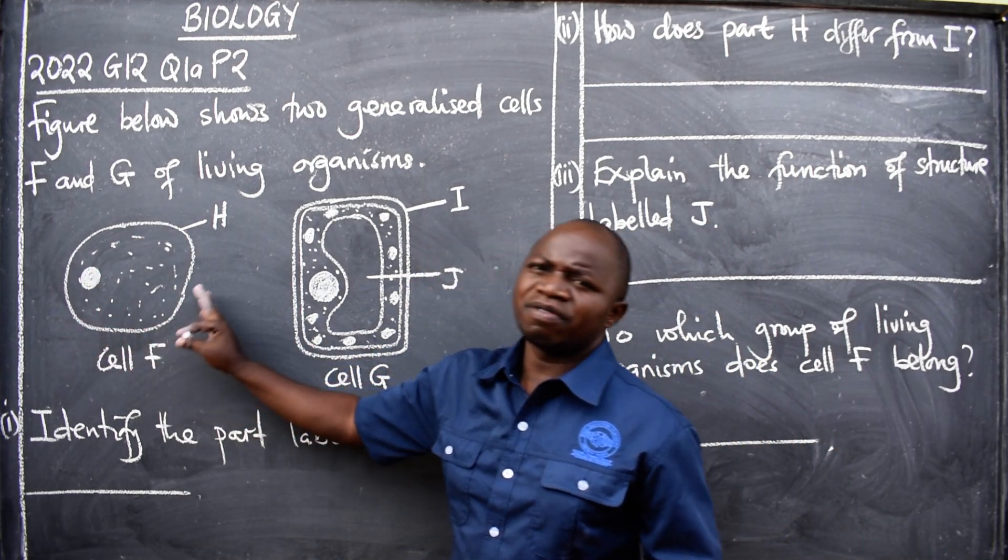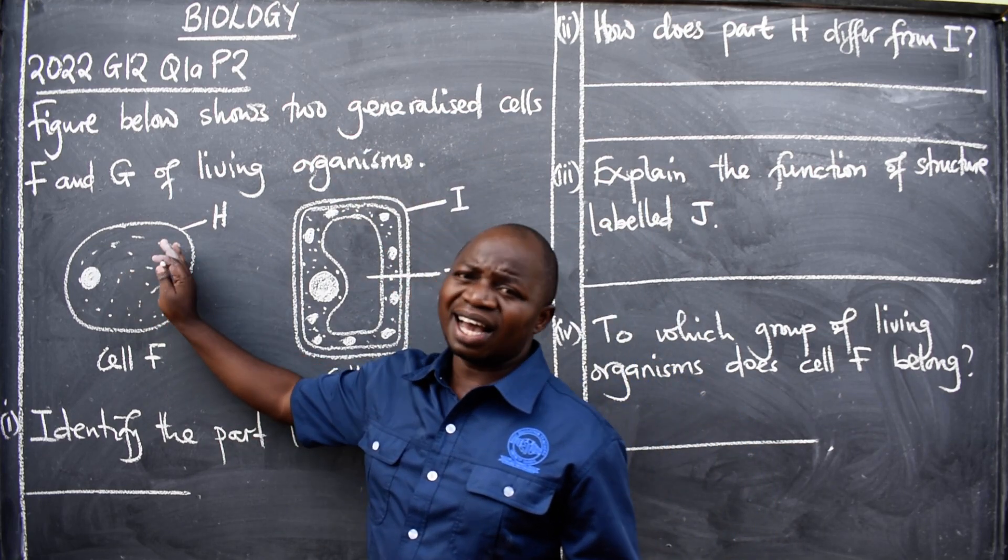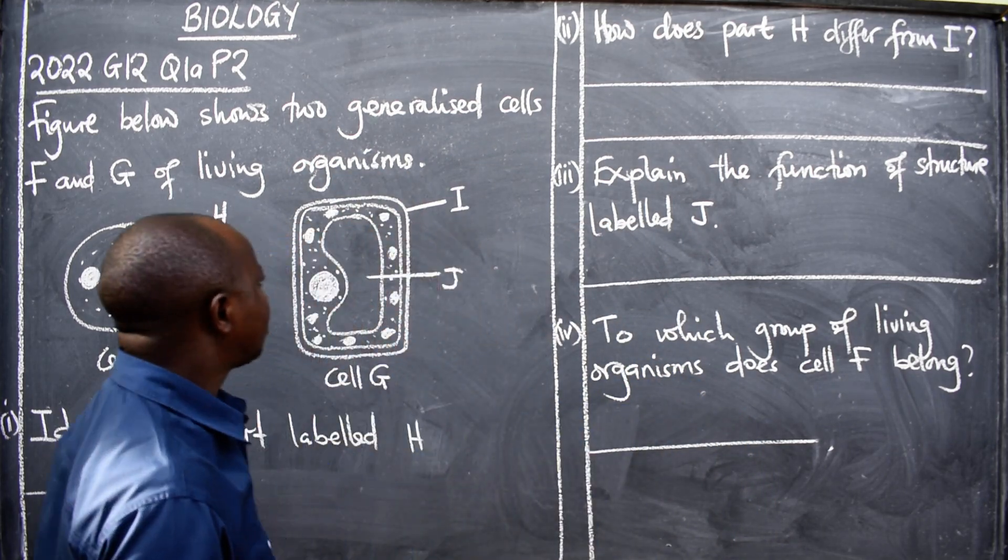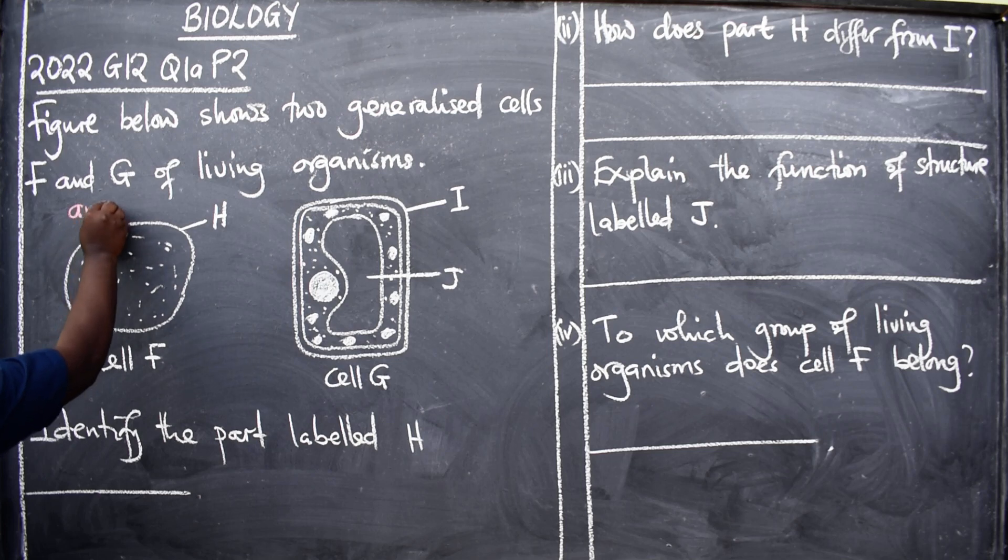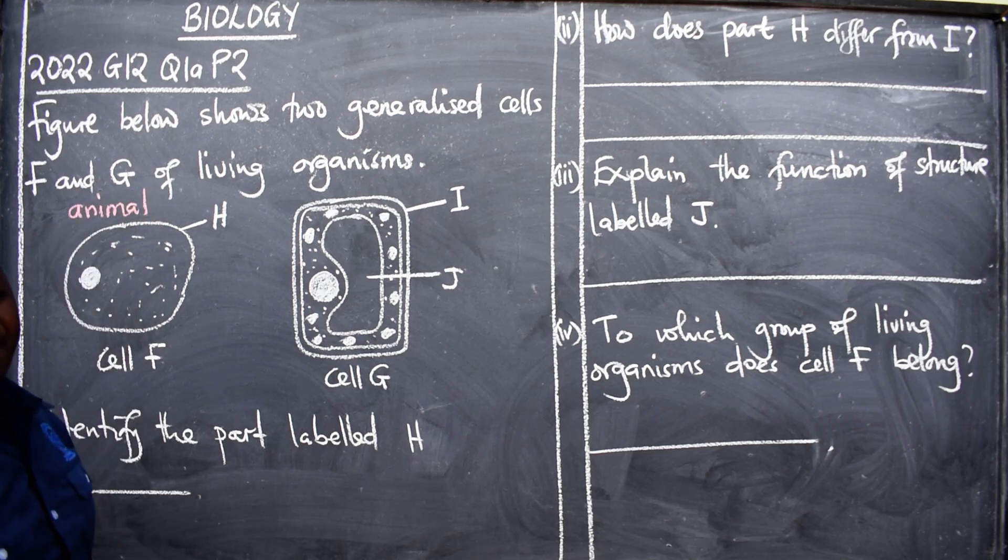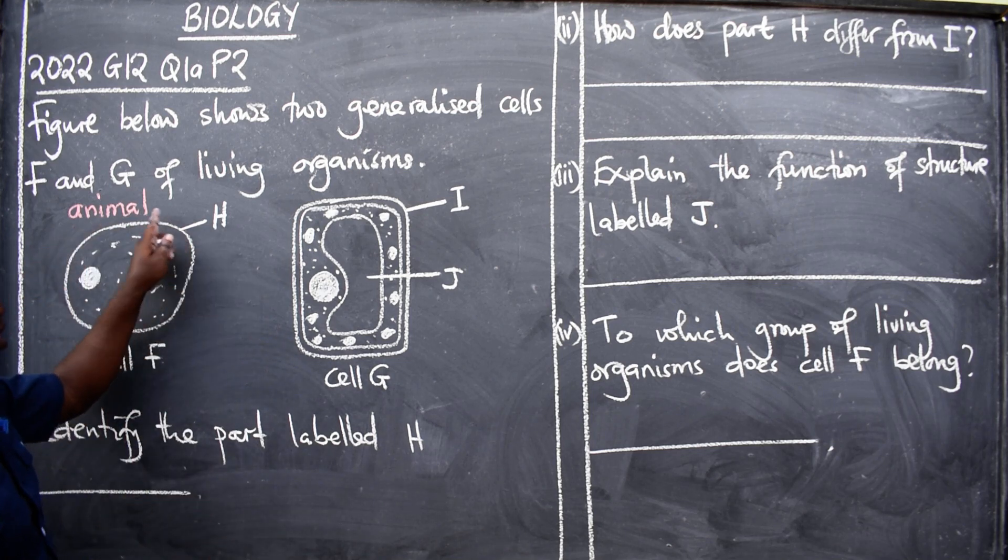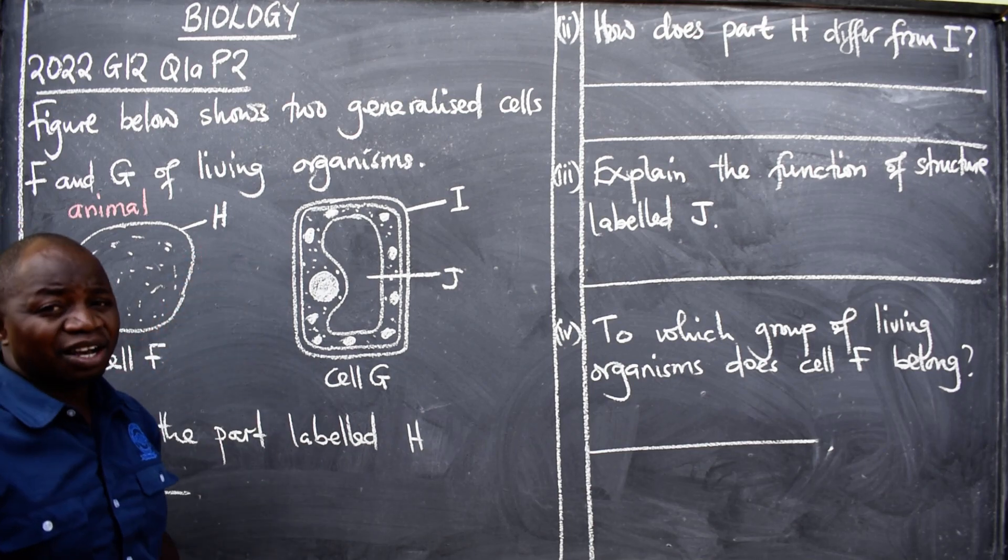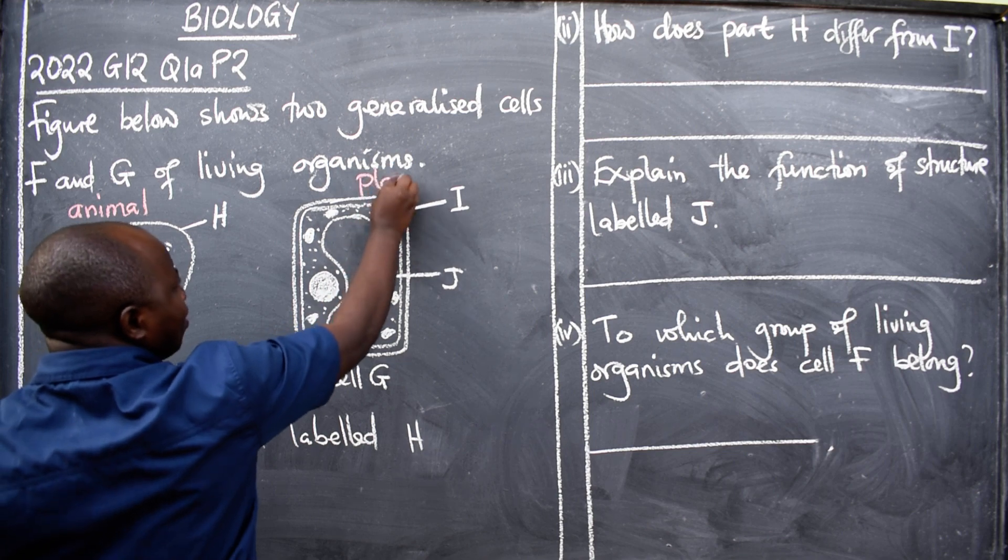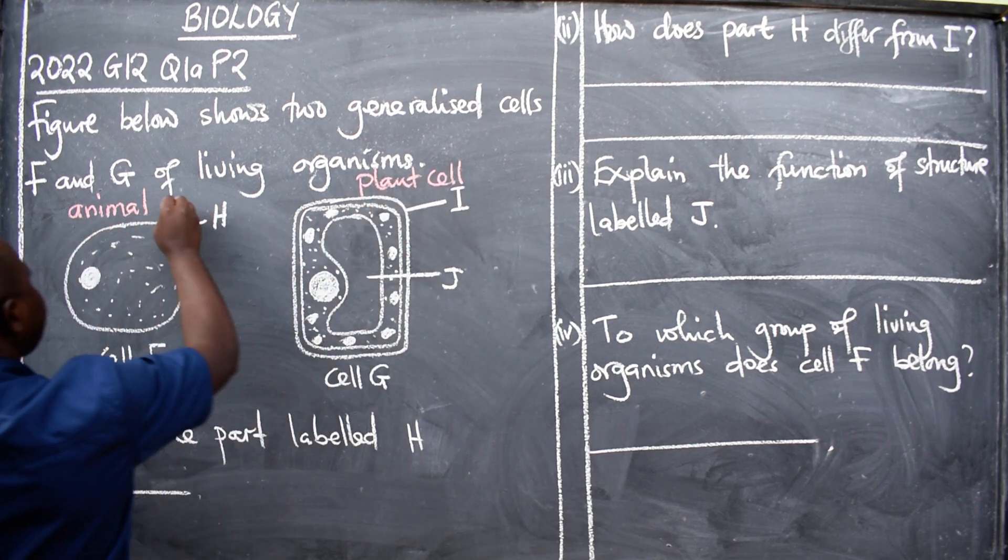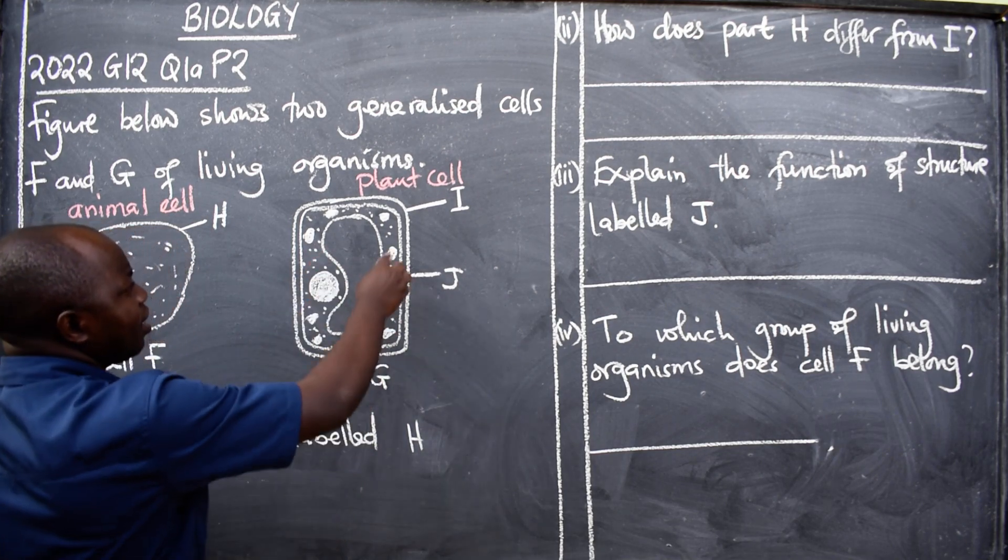So first of all you need to know the cells. What type of cell is this or what cell is this? Remember generalized. So this is an animal cell. You need to know that this is an animal cell. Why? An animal cell has got only one ring here which we call the cell membrane.